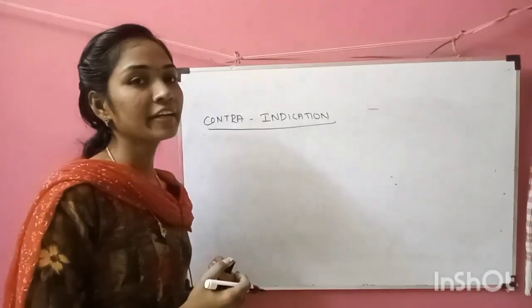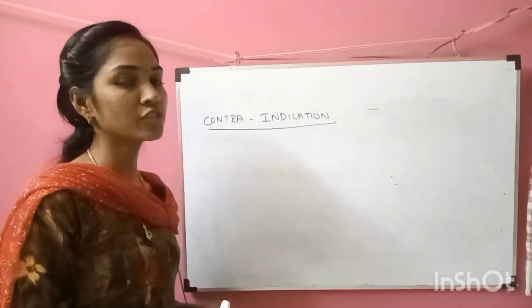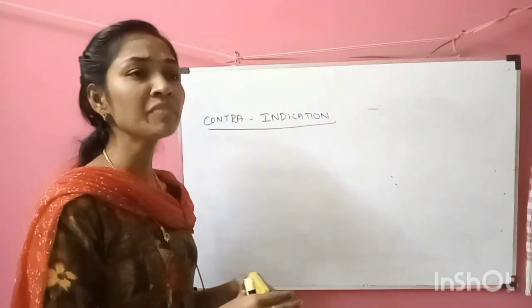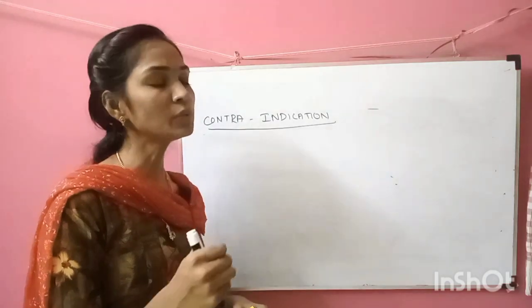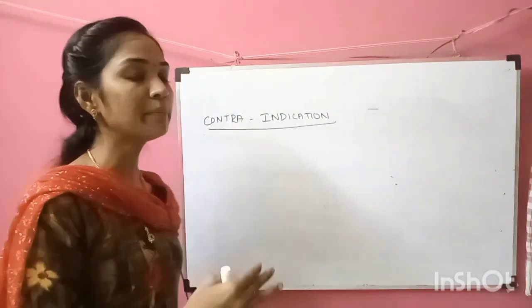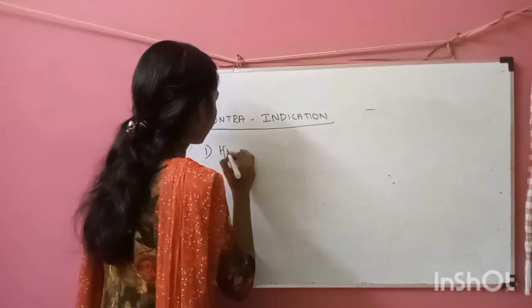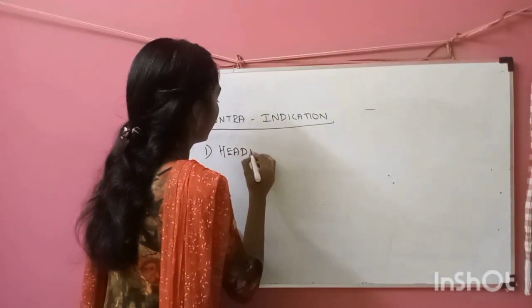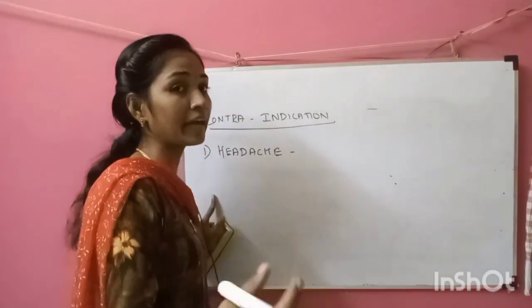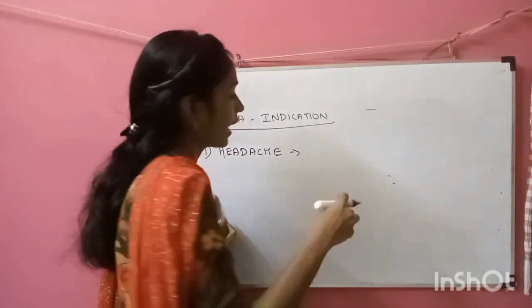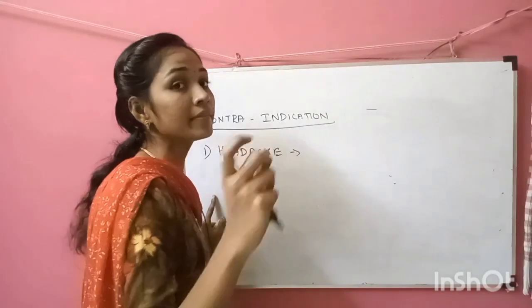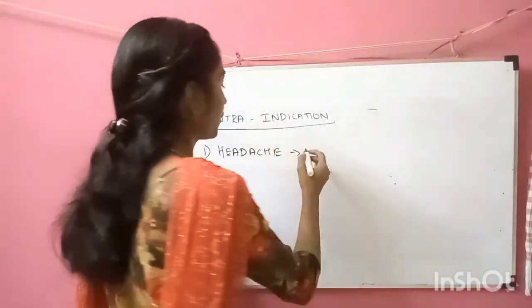There are some contraindications to lumbar puncture. One contraindication is increased intracranial pressure. The signs of increased intracranial pressure include: first, headache — this headache will be present when the patient wakes up, meaning the patient wakes from sleep and already feels a headache.